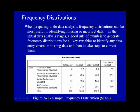When preparing to do data analysis, frequency distributions can be most useful in identifying missing or incorrect data. In the example in figure A1, suppose one or more codes was a 0 or a 5, or any value other than a 1, 2, 3, or 4 — these would appear on the frequency distribution table. In the initial data analysis stages, a good rule of thumb is to generate frequency distributions for all key variables to identify any data entry errors or missing data, and then to take steps to correct them.